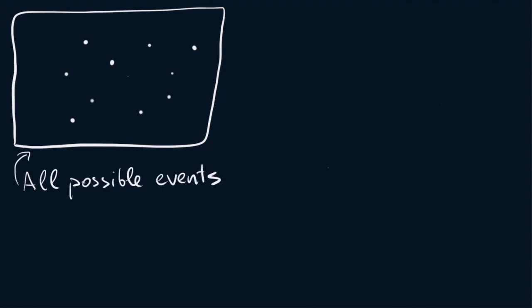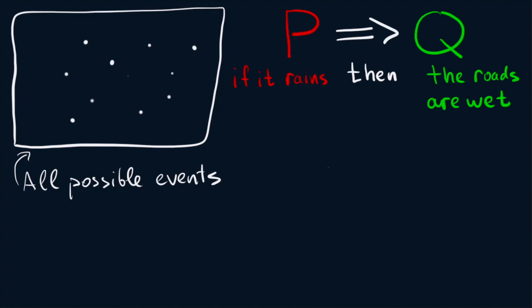If we now have an implication P implies Q, for example, if it rains then the roads are wet, we can represent these statements graphically. So now, if we think about this event Q, how can we represent it in this rectangle?